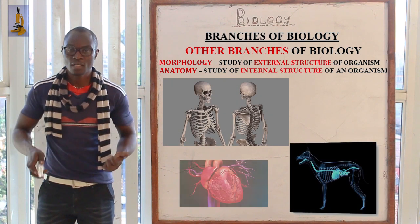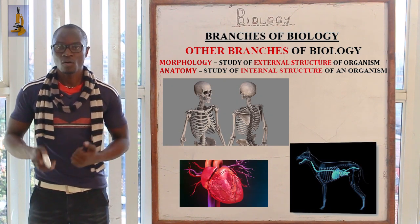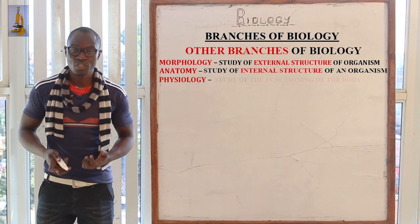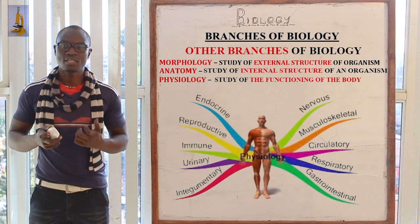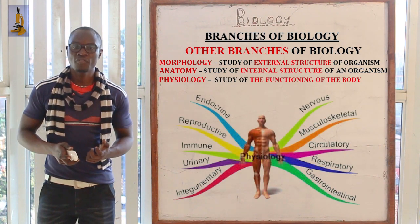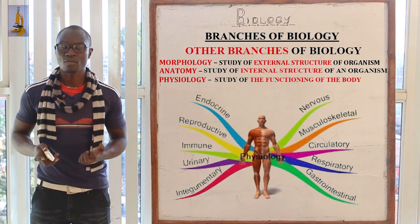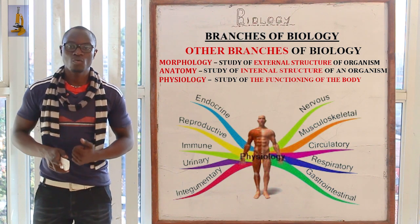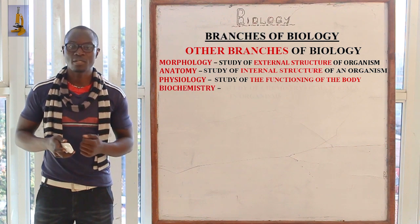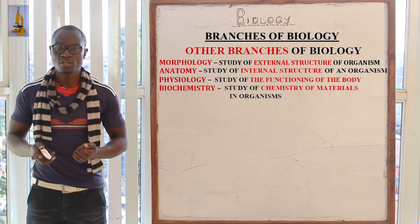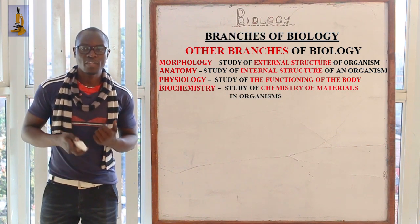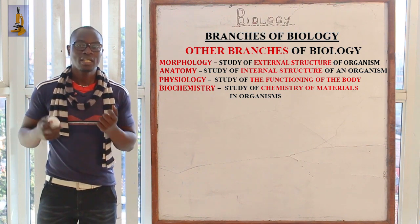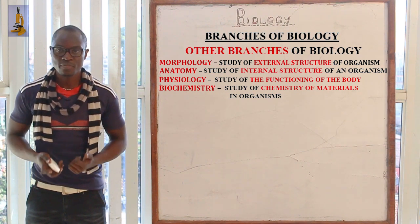The next branch is anatomy, which is the study of the internal structures of living organisms. We also have physiology, which is the study of the functioning of the different parts of the body. Then there is biochemistry, which is the study of chemical patterns and chemical materials inside living organisms.